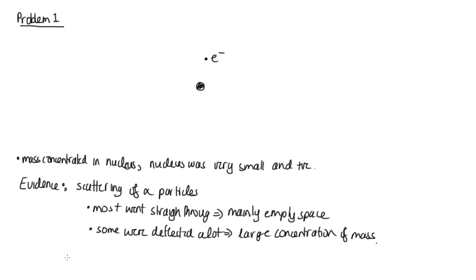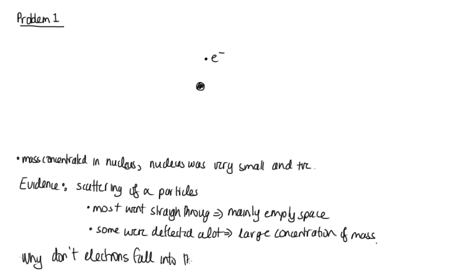Some alpha particles were deflected a lot, which meant that there had to be a large concentration of mass. So what Rutherford's model couldn't explain was: if we had negative electrons on the outside and the positive proton in the middle, why didn't the electrons fall into the nucleus — i.e., why are atoms stable?